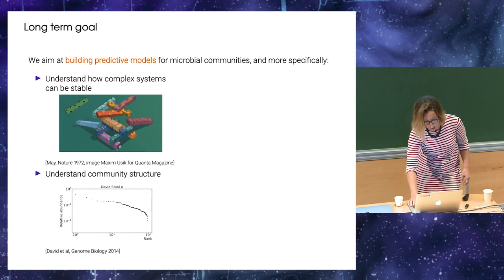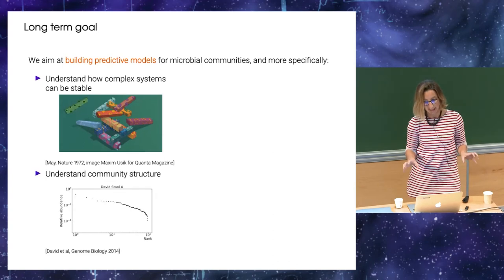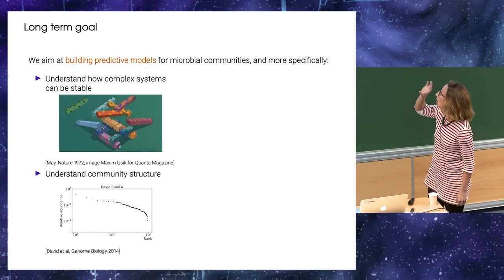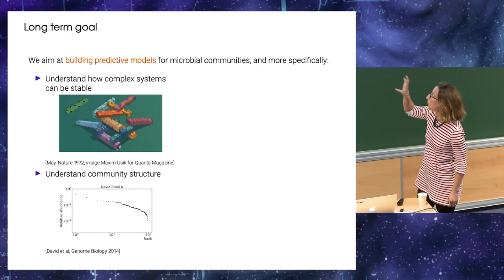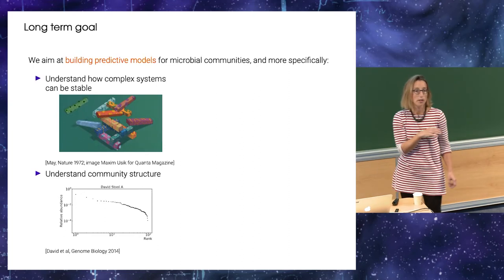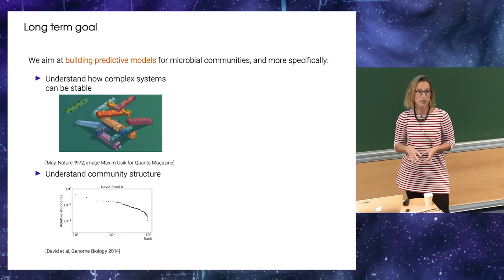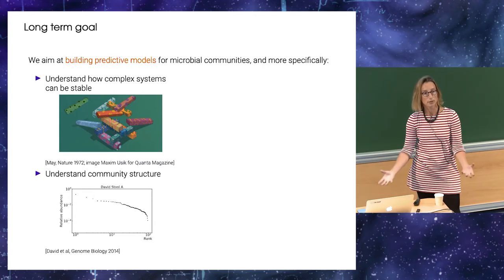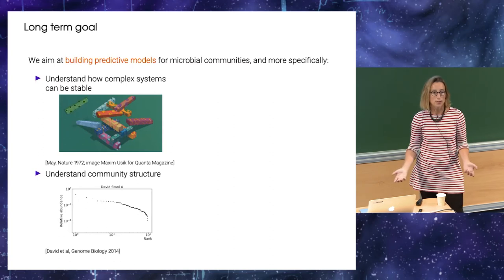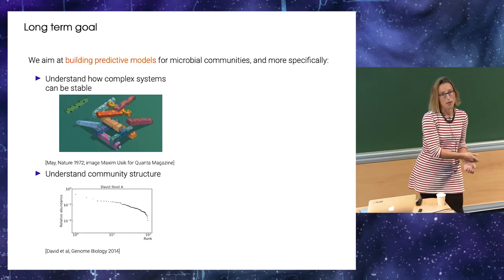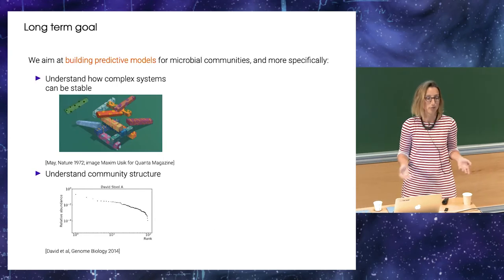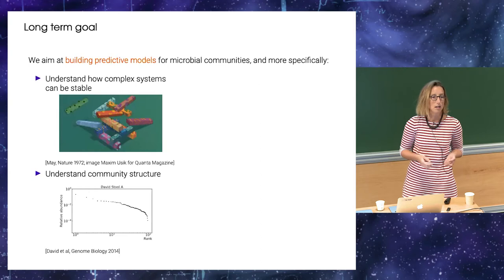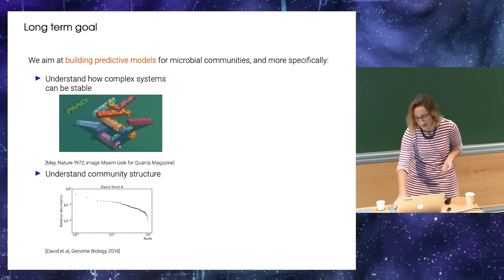We want to understand community structure, and I will come back to this later. But the basic idea is that we observe across microbial communities that the composition is really dominated by rare species. So we have a few abundant species, but the majority of the communities is many different rare species. So why don't, we could think naively that they would die and they would be killed by the strongest guys. But it's not the case.